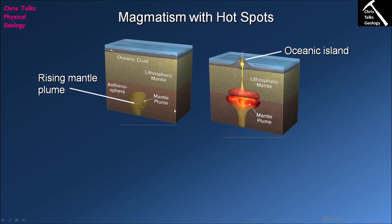Now, if this mantle plume gets stuck underneath some oceanic crust, what's going to happen? The mantle plume hits the bottom of the oceanic lithosphere and spreads out along its base — this is perfectly normal. Our model suggests that when a mantle plume hits the bottom of the lithosphere, it will typically stop there and spread laterally.